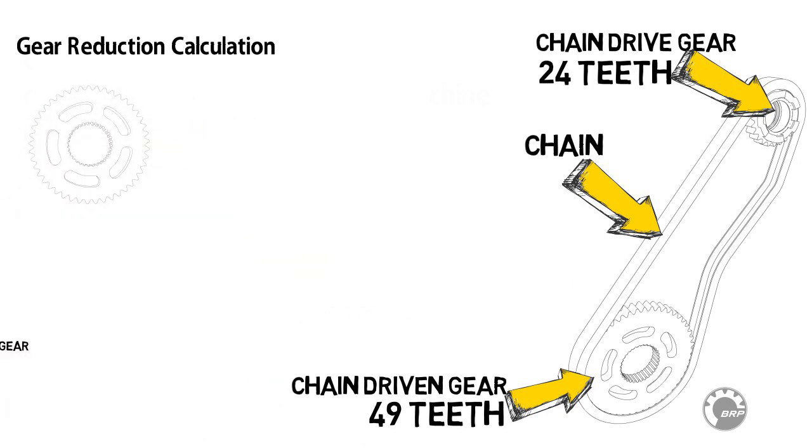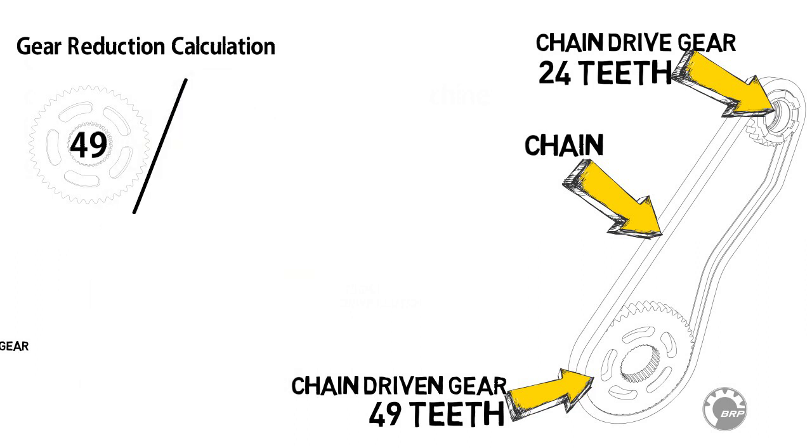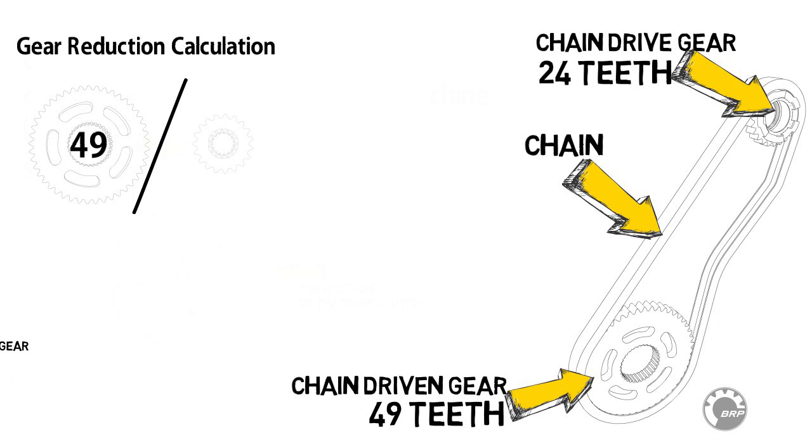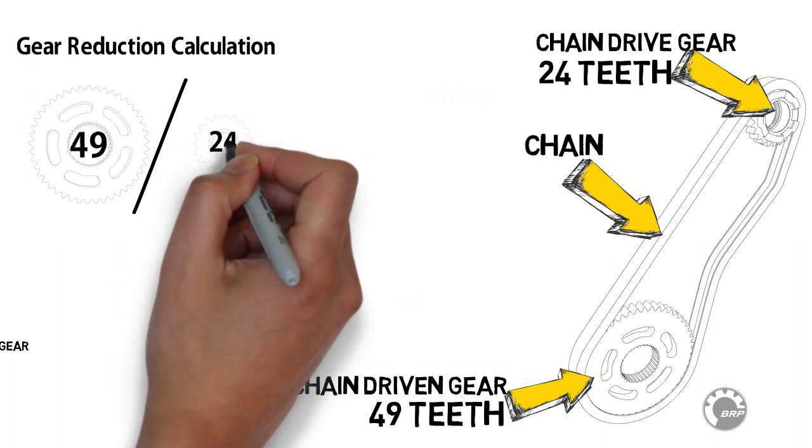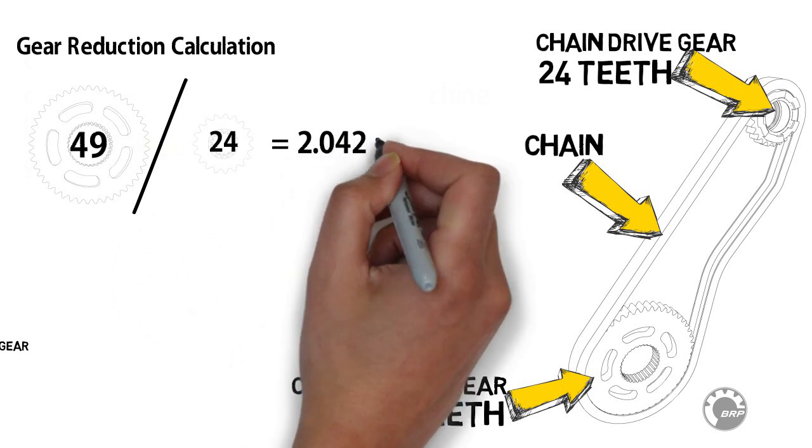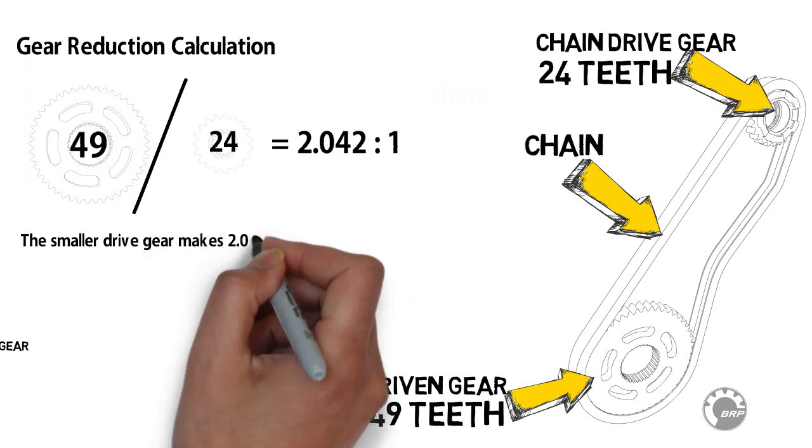Suppose a snowmobile was geared to attain full CVT upshift under average conditions. Then, under ideal conditions, such as running on a perfectly smooth frozen surface, the CVT would fully upshift. As a result, the engine would most likely exceed its maximum recommended RPM.